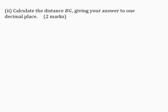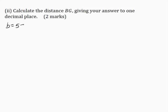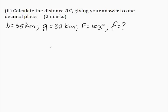Part 2: Calculate the distance BG, giving your answer to one decimal place for two marks. On our diagram, they gave us the two sides and the angle formed between them, so I will use the cosine rule. They want us to find BG, and BG is side F, BF is side G, and FG is side B. So B is equal to 55 kilometers, G is equal to 32 kilometers, angle F is equal to 103 degrees, and side F, which is BG, is what we want to find. I'll write the cosine rule as: F squared is equal to B squared plus G squared minus 2BG cos angle F.